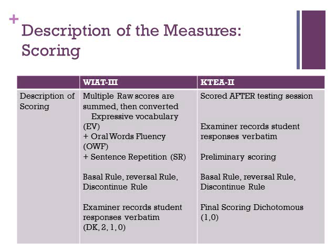Both measures utilize reversal rules and discontinue rules to determine start and stop points. For the WIAT-3, raw scores for expressive vocabulary, oral word fluency, and sentence repetition are converted into standard scores using age or grade equivalent norms. They are then summed to derive the oral expression raw score, which is converted into a composite standard score using the norm tables provided. Student responses are scored according to criteria provided, with raw scores based on a scale of don't know, two-point response, one-point response, or zero.